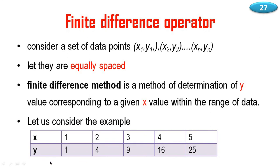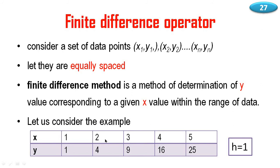Consider the example where x values are 1, 2, 3, 4, 5 and the y values are 1, 4, 9, 16, 25, where f(x) = x². The difference x2 minus x1 equals 1, so h = 1. This difference is constant, meaning they are equally spaced.